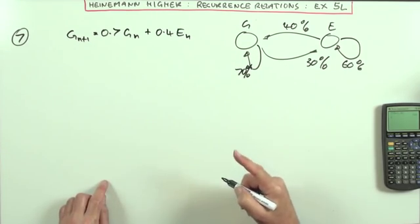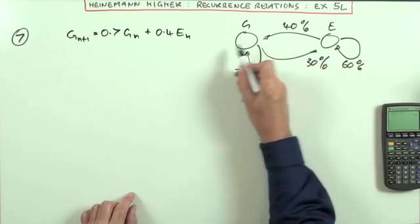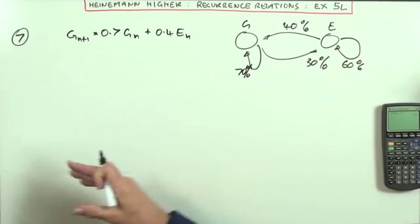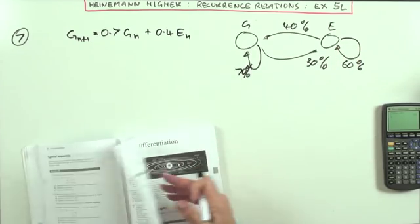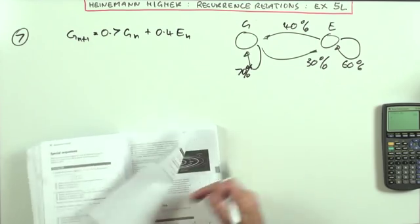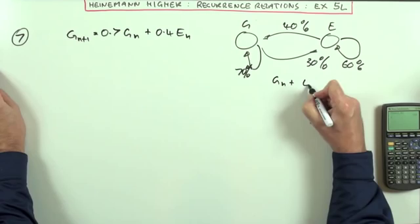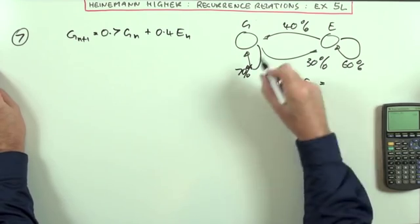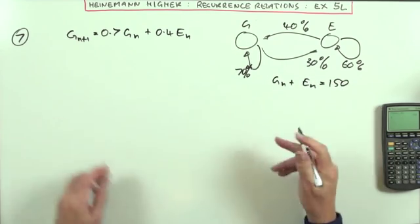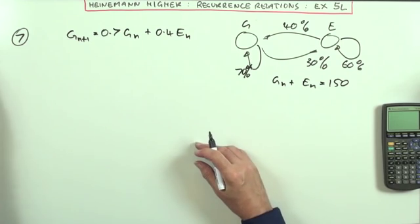Now the other bit of information I didn't write down was between them, altogether, there were 150 cars. So altogether, G_n plus E_n in any particular week has to be 150, unless someone head off somewhere and never go back again.